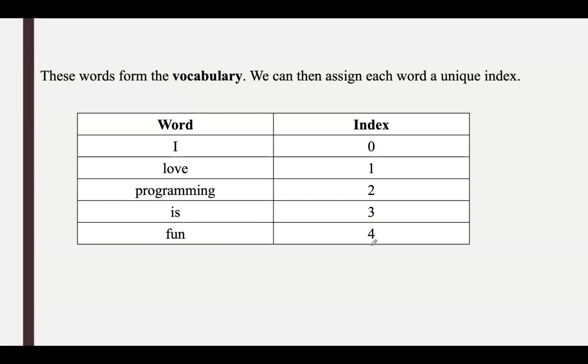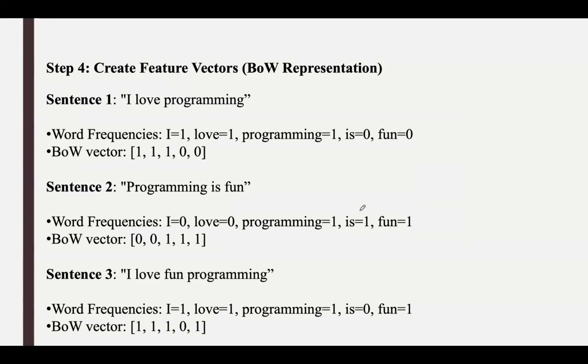Step 4 is to create feature vectors. Now we convert each sentence into a feature vector based on the vocabulary. The value in each dimension corresponds to the frequency of the word in that sentence. Consider the first sentence: 'I love programming.' We need to find out how many times these words appeared in the sentence.